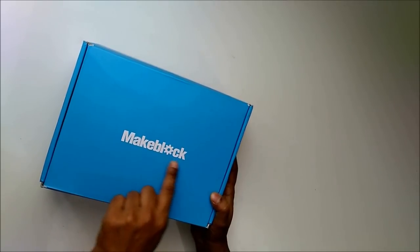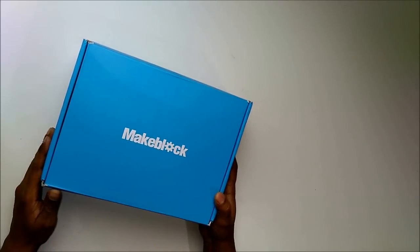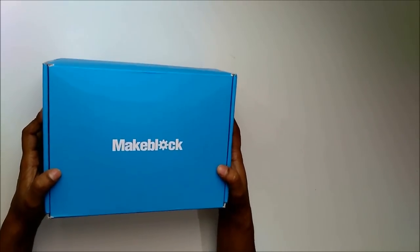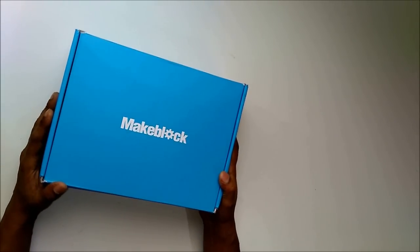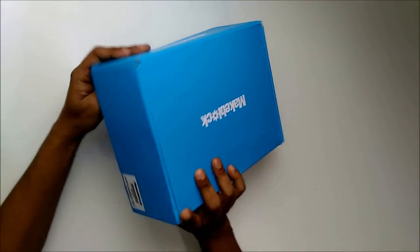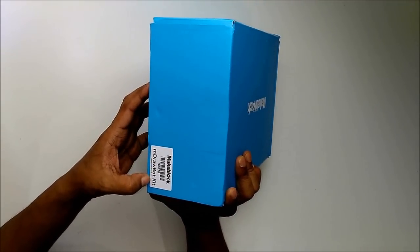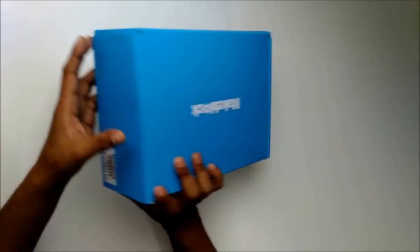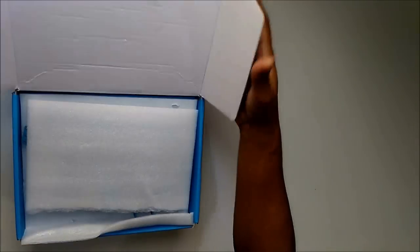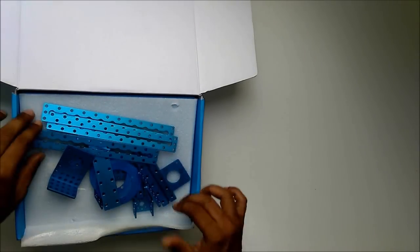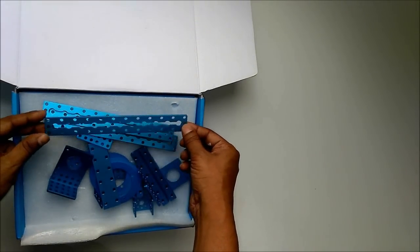Hi guys, I have received this shipment from MakeBlock. This nice blue box is a robot making kit. It's quite weighty, 2 to 3 kilos. It's written robot kit. Let's unbox it. There are multiple metal structures, nice blue color. They are made of aluminum so all are lightweight. I think this is to make the robot body.